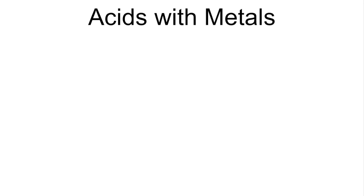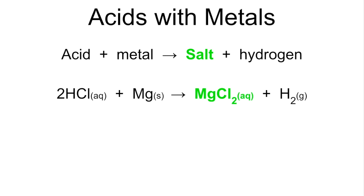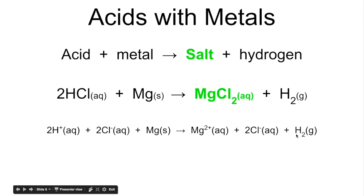Acids with metals is the last reaction we're going to look at. The general reaction is acid plus metal makes salt and hydrogen. The example is hydrochloric acid plus magnesium making the salt magnesium chloride and hydrogen H₂. Showing the ions: 2H⁺ and 2Cl⁻ from the acid; magnesium is a metal so it doesn't exist as ions and we show it as Mg. The aqueous salt is shown as ions, and H₂ exists as molecules so no ions there. Canceling the 2Cl⁻ ions leaves us with the ionic equation.